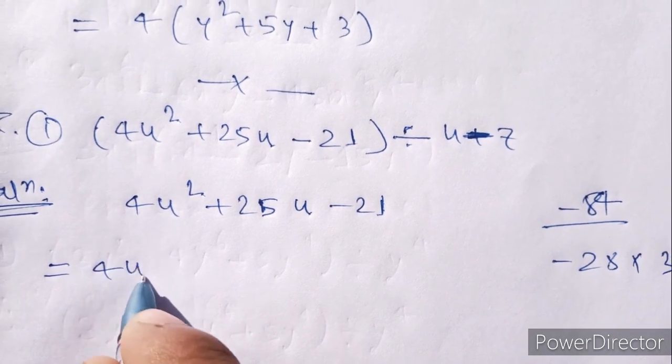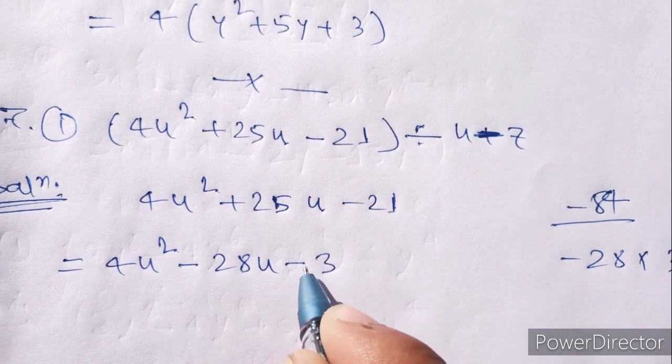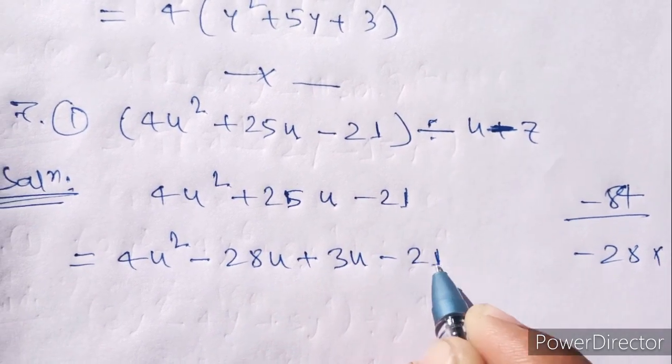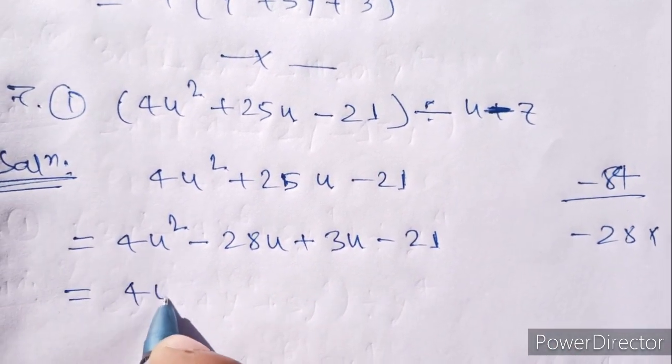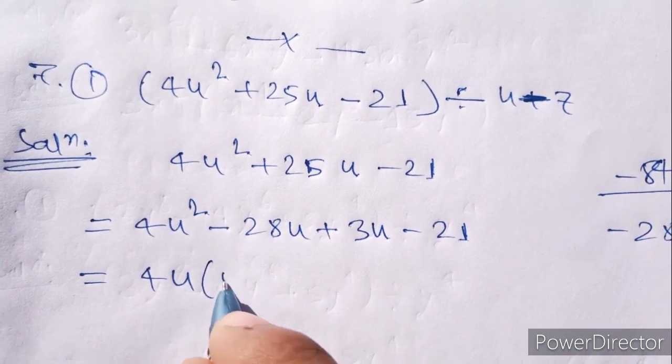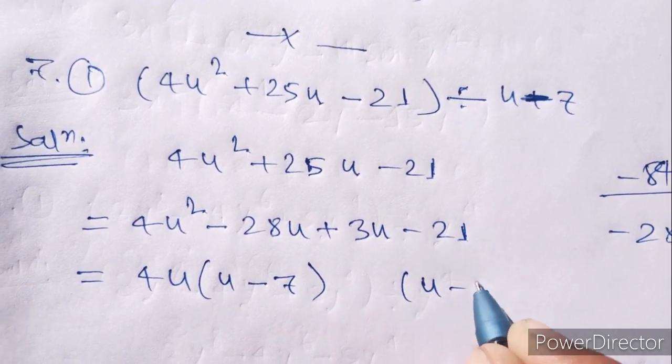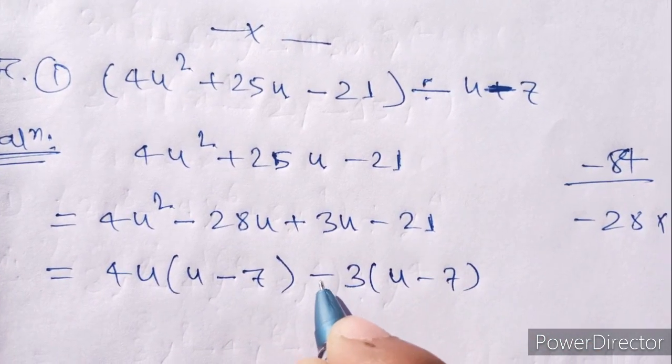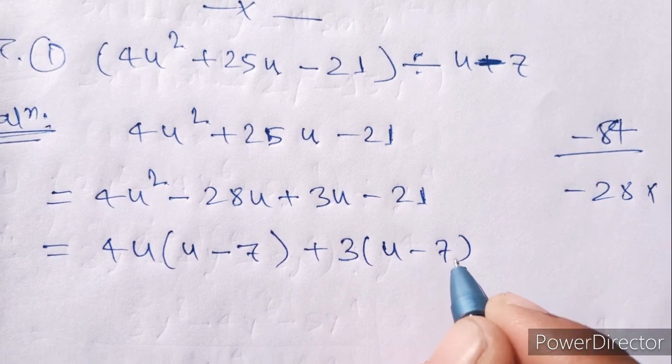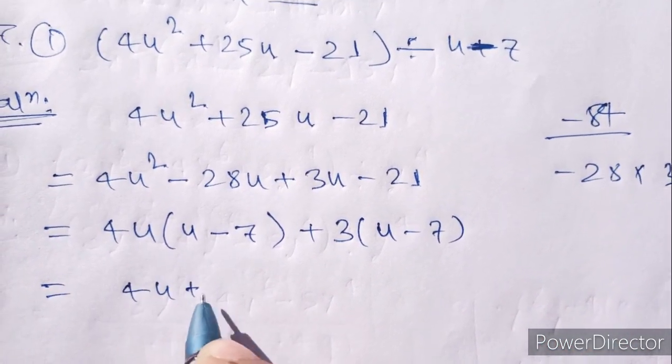Equal 4u² minus 28u plus 3u minus 21. Equal 4u common, 4u² minus 4 into 7, u minus 7, 3 plus 3u minus 7.